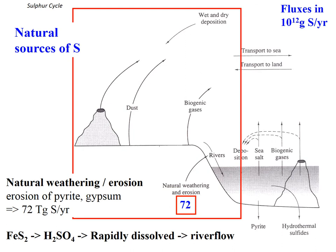Looking at fluxes of sulfur in and out of different parts of the Earth system, the main source is ultimately the weathering and erosion of rocks — pyrite and gypsum minerals — giving 72 teragrams of sulfur per year. These are really easily weathered minerals, so they weather into the ocean, adding calcium and sulfate.